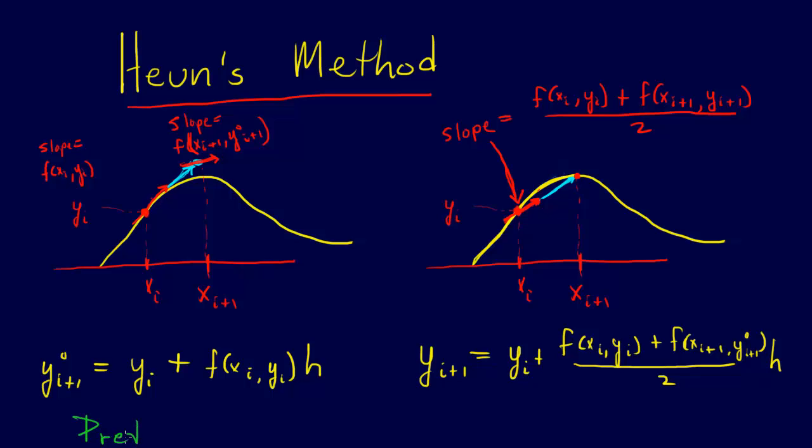So predictor is what this is, a predictor and a corrector. And all Heun's method is, the only difference between Heun's method and Euler's method is Heun's method has a different way of coming up with a slope.